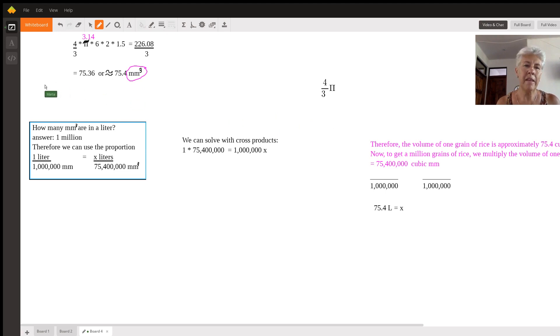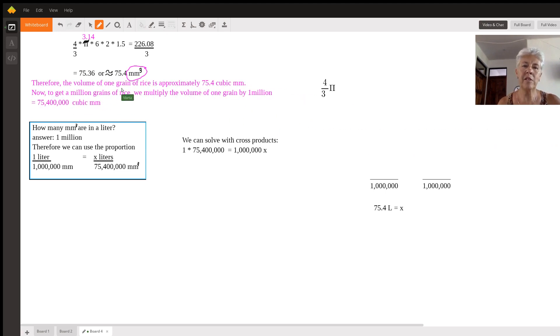What does that mean? The volume of one grain of rice is approximately 75.4 cubic millimeters but we wanted a million how big is that? So to get the million we multiply by a million grains and we end up with 75,400,000 cubic millimeters. All right now we've got to figure out what we're going to put that in.